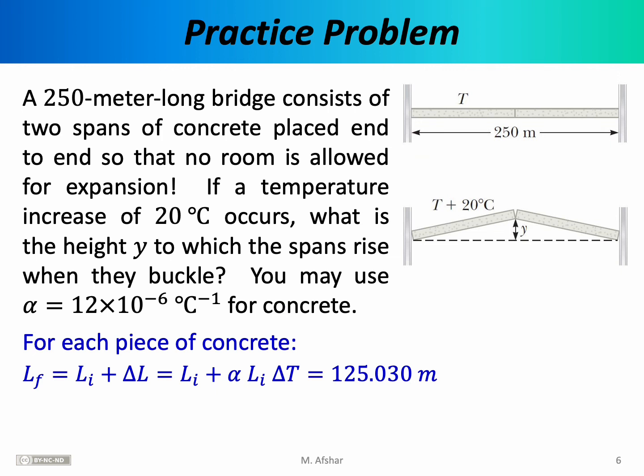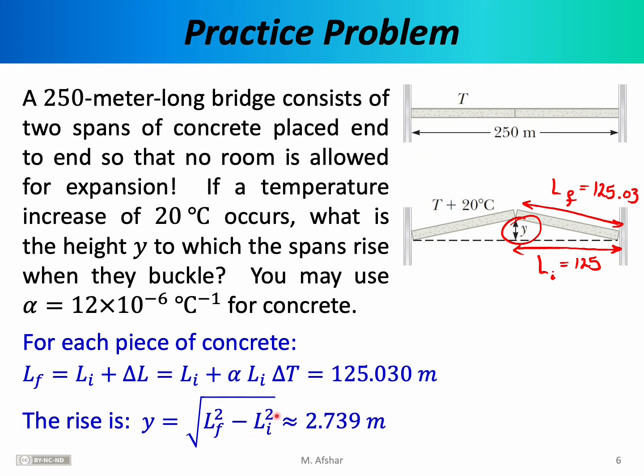Now what we're really interested in is in the height y, and what we know is that the initial length here, this distance, was equal to 125 meters. We also know that this distance here is the final length, which is equal to 125.03 meters. To figure out y, we simply need to calculate the third leg of a right triangle. For that, you could use the Pythagorean theorem, and you will find that y is equal to the square root of L final squared minus L initial squared. Plug those numbers in, and you will find that y is approximately equal to 2.7 meters. So when these two spans buckle, they rise not just by a very small amount, they rise by a very noticeable 2.7 meters. That's significantly taller than the average person.